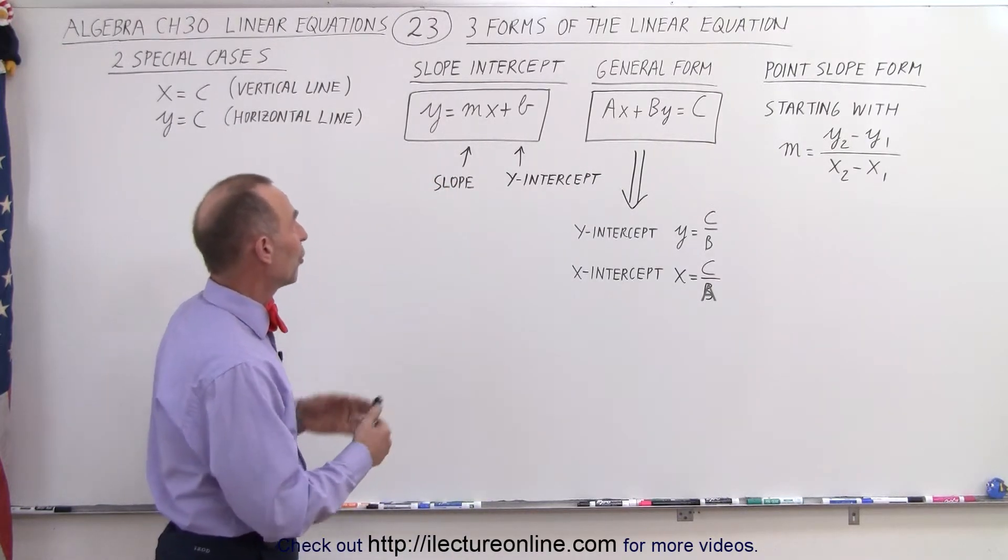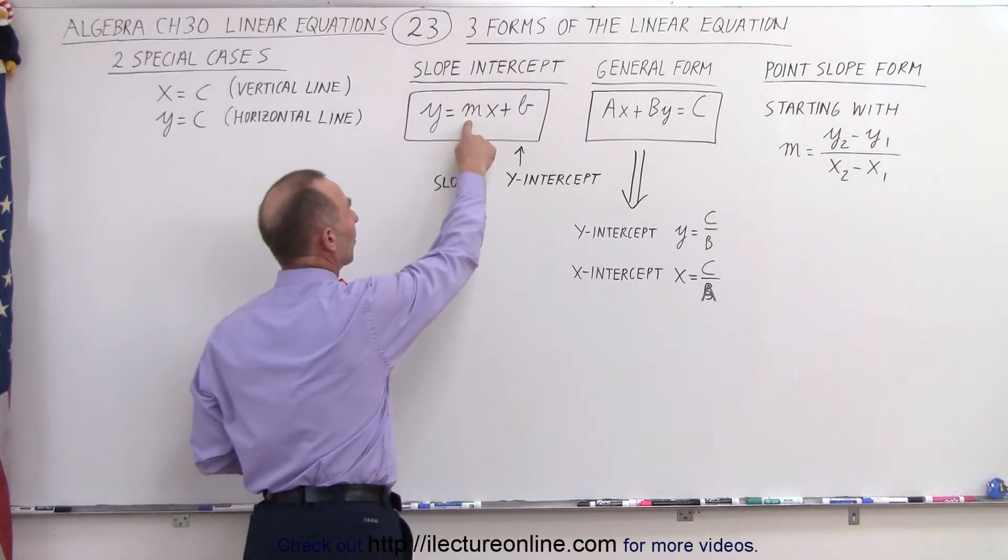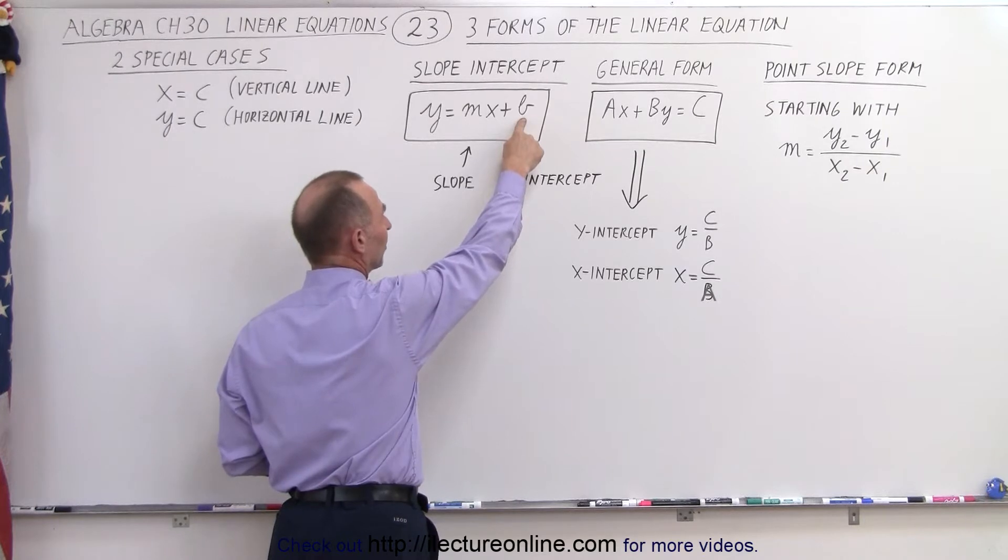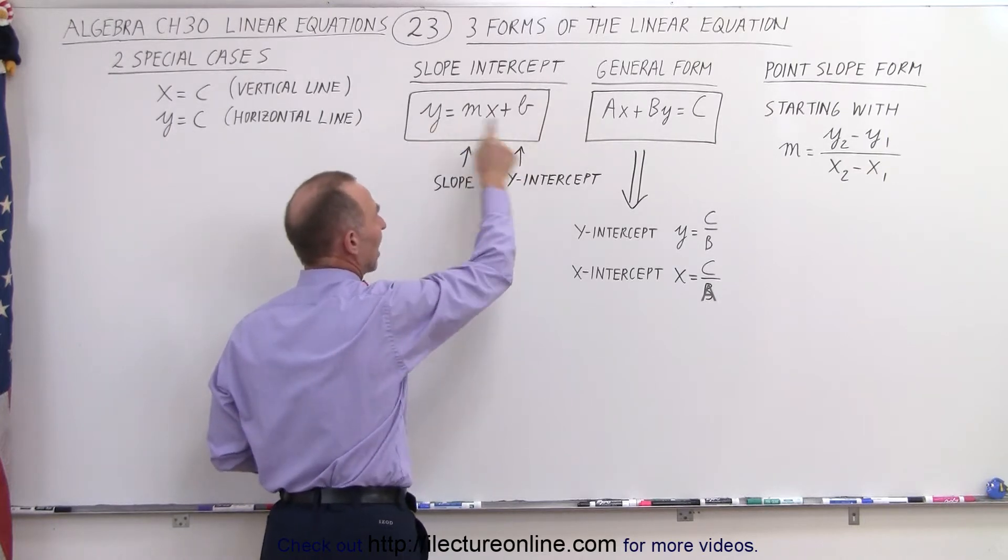The slope-intercept is straightforward. All you need to know is the slope of the equation, plug it in for m, and the place where we cross the y-axis, the y-intercept, plug it in for b, and we have the equation.